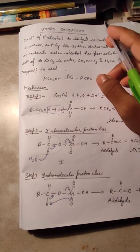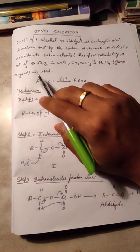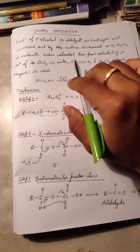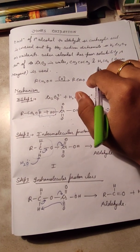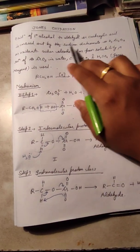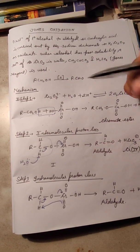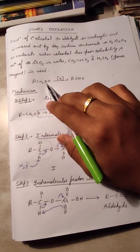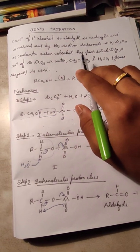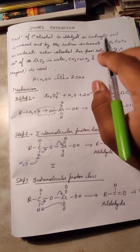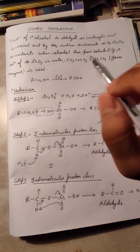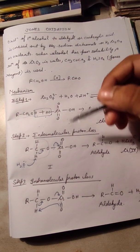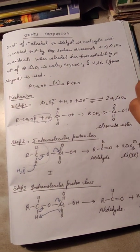So this is all about Jones oxidation. Jones reagent means chromic anhydride in water, acetone, and sulfuric acid. This is an oxidation reaction by which we can prepare aldehyde or carboxylic acid from any primary alcohol. If the primary alcohol has poor solubility, we introduce Jones reagent. Thank you. In the next video I will discuss about the alphabet K.